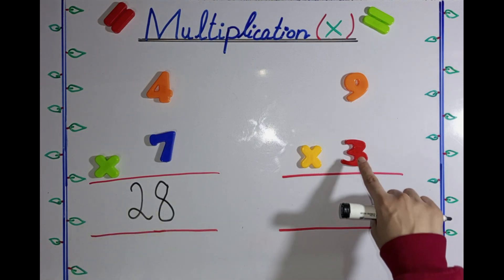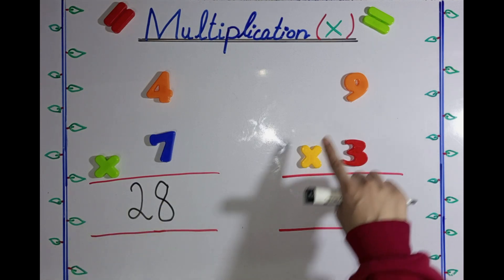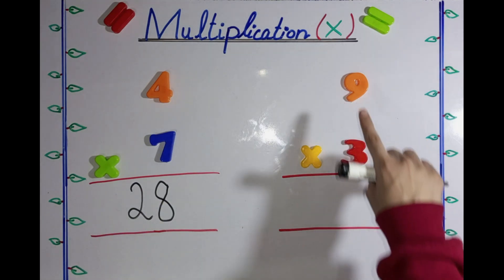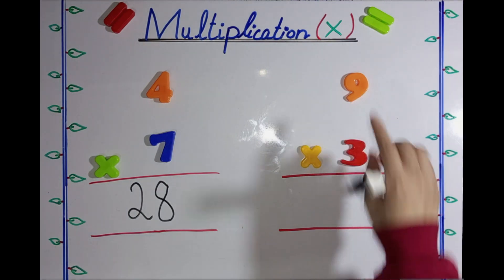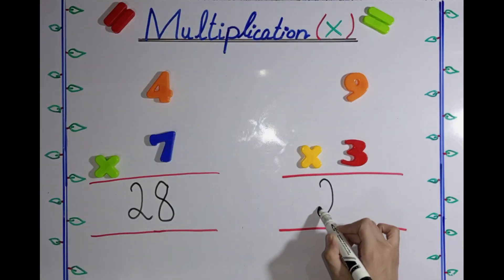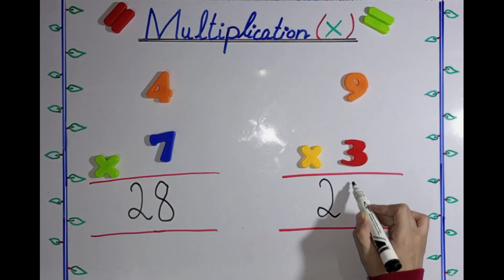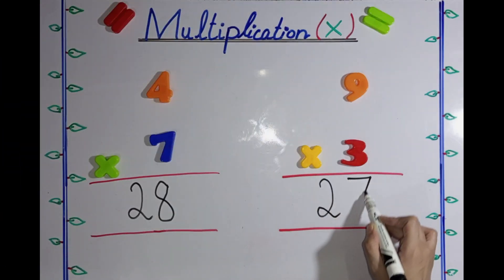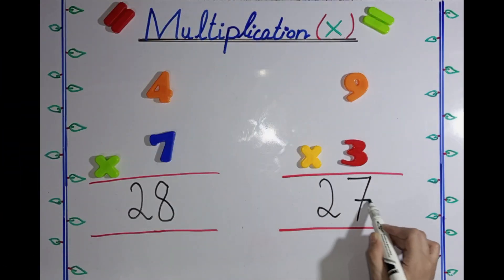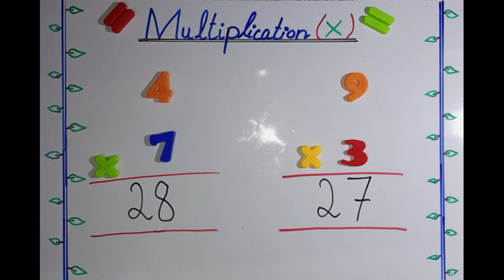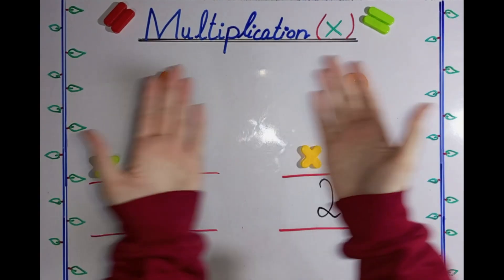...is 3 multiply 9. 3 9s are 27. The answer is 27. Well done!